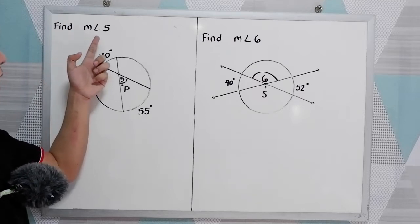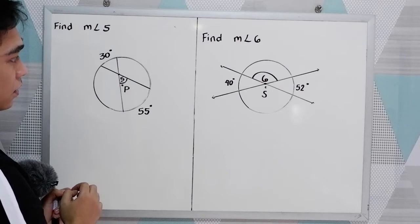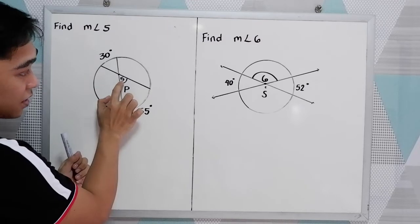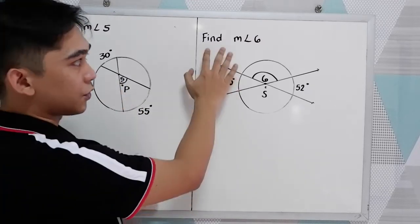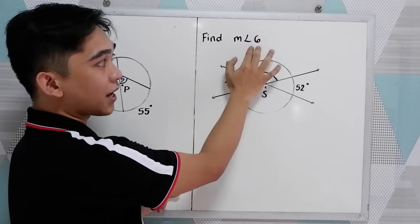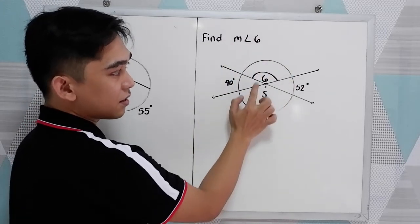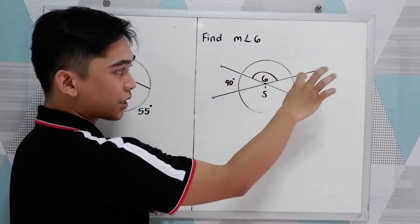Find measure angle 5. So, given circle P and the intercepted arcs, we have 30 and 55, and this is our angle 5. For the second one, find measure angle 6. So, given circle S, this is our angle 6. Then the intercepted arcs, 40 and 52.